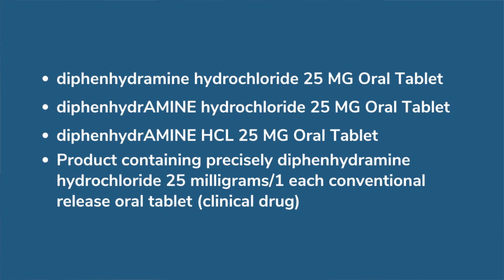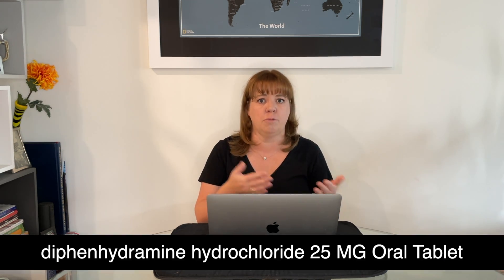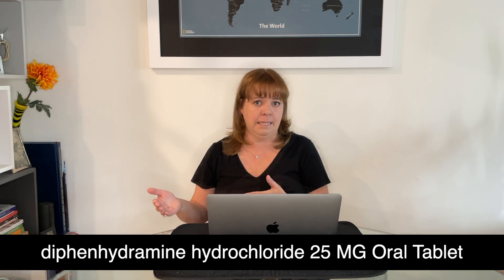In order to produce an RxNorm code, there are five main steps that occur. Looking at the diphenhydramine hydrochloride example for oral tablets, you can see that there are several different synonyms or concepts that will come up frequently in those vocabulary lists. They're all exactly the same thing — they're all looking at the 25 milligram oral tablet, just articulated in a slightly different way. So the first step is to group those together, and the second step is to create a normalized name. In this particular instance, the normalized name assigned is diphenhydramine hydrochloride 25 milligram oral tablet.